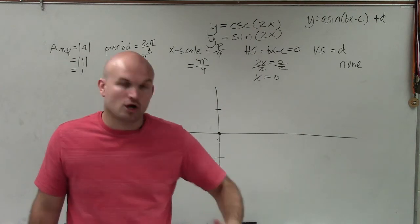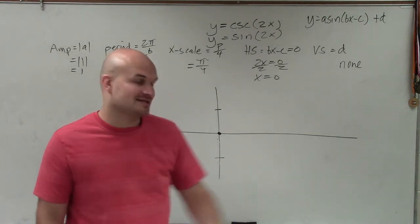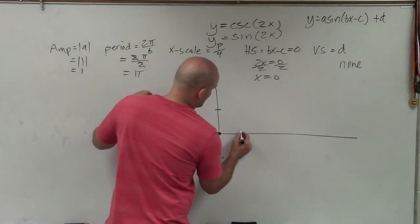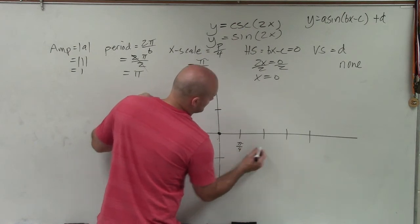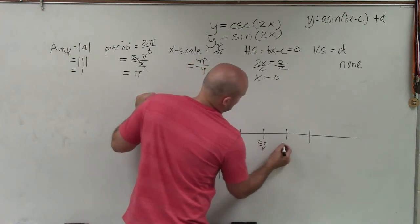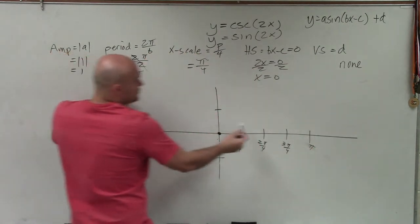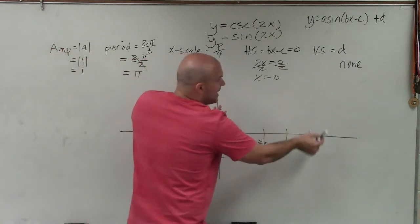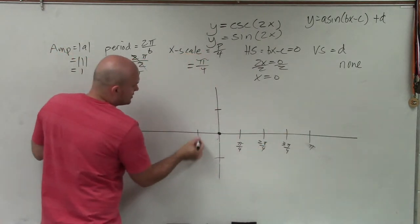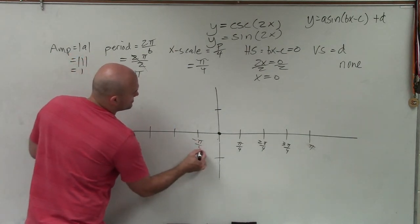Remember, the x scale tells you where all your important points are going to be, as far as the maximum, the x-intercept, the minimum, x-intercept. So I'm going to start scaling this at pi over 4, 2 pi over 4, 3 pi over 4, 4 pi over 4, which is just pi. Notice, when I do four of my x scales, that takes me to one period. That means going in the positive direction is going to give me one period. So I can go in the negative direction to get me my second period. I'll just make everything negative.